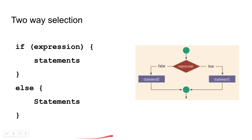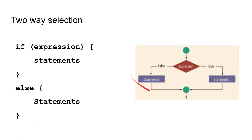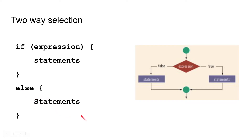Two-way selection looks like this. We have some expression getting tested, and if it's true, it executes the statements in the first set of curly braces. Otherwise, it executes the statements in the else's curly braces. Code below both branches will execute once either case hits its closing brace. Note: if you hit the true case, it will skip over the false case entirely.